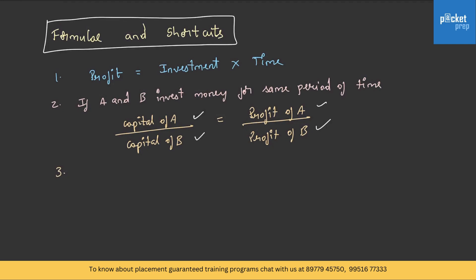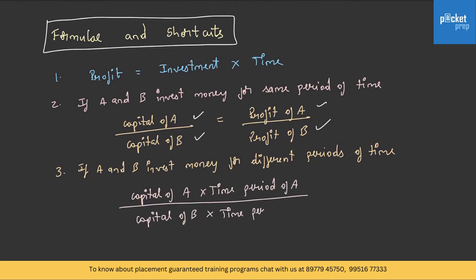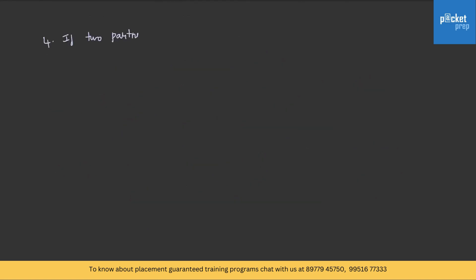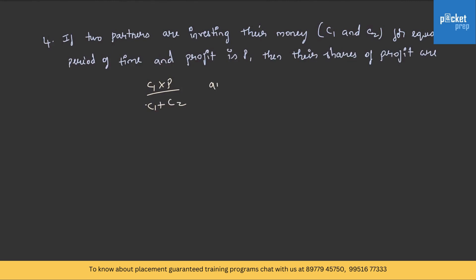If A and B invest money for different periods of time, then capital of A multiplied by time period of A, divided by capital of B multiplied by time period of B, gives the profit ratio. If two partners invest for equal period of time and their total profit is P, then their shares are C1×P/(C1+C2) and C2×P/(C1+C2).